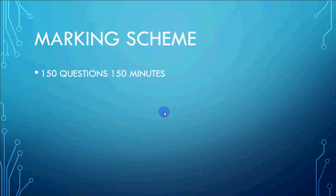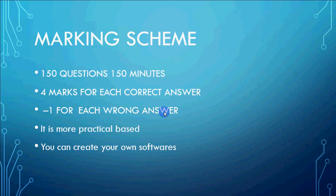The marking scheme has 4 marks for a correct answer. If there is negative marking, it will be minus 1 for every wrong answer. There are 150 questions in total and 150 minutes in total, so in 1 minute you should solve 1 question. The questions are MCQs — multiple choice questions.